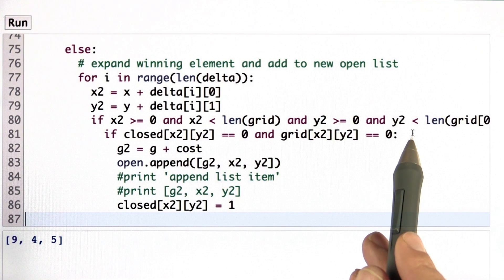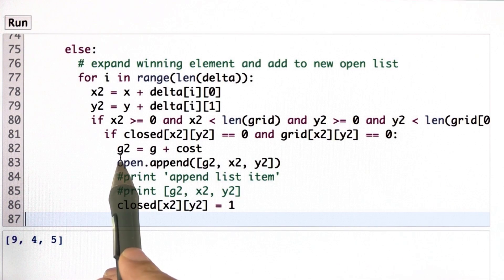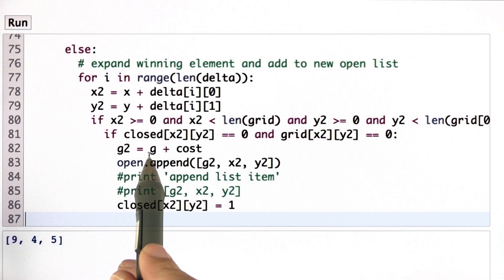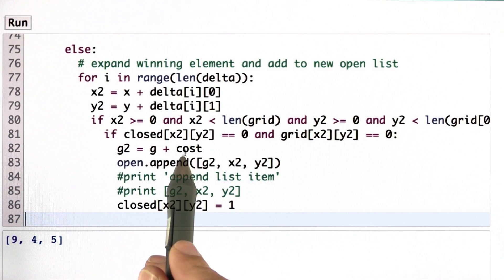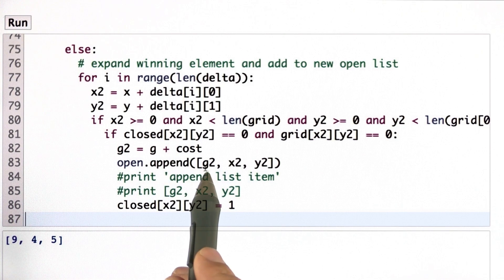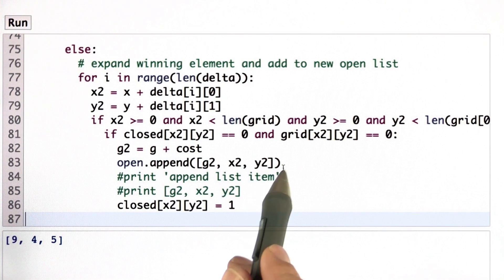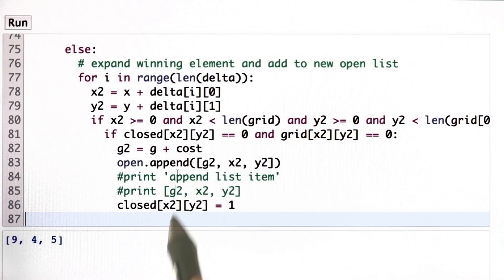I increment the cost from g to g2 by adding one in this case. Cost is one. And then I append the new triplet, g2, x2, y2, to my open list. And I check the coordinate x2, y2 so I never expand it again. That is the recursion.